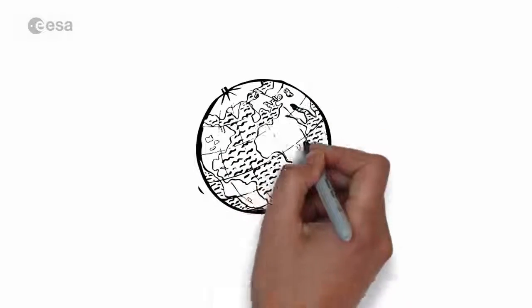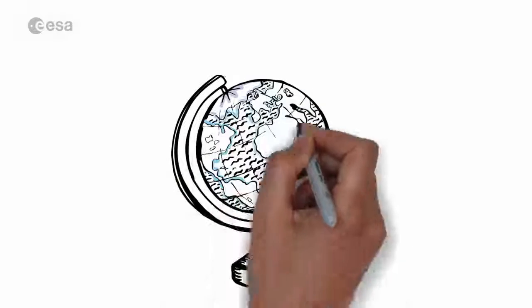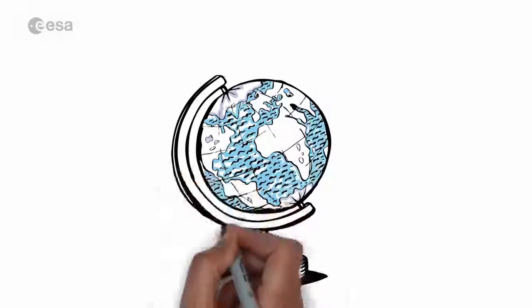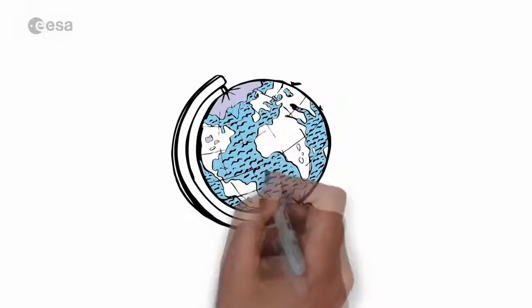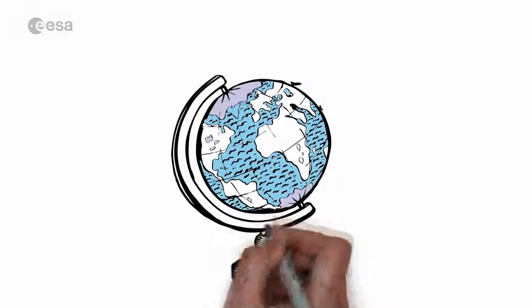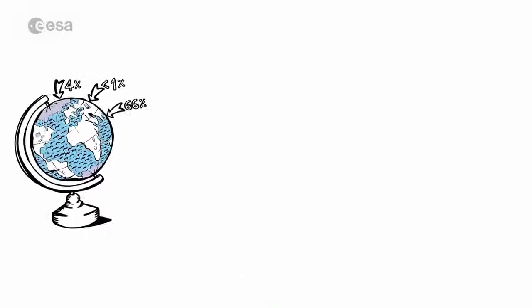This is our home planet Earth. It's called the Blue Planet because most of it is covered by water. About two-thirds is covered by oceans and another four percent by fresh water in the form of ice sheets, glaciers, lakes and rivers.